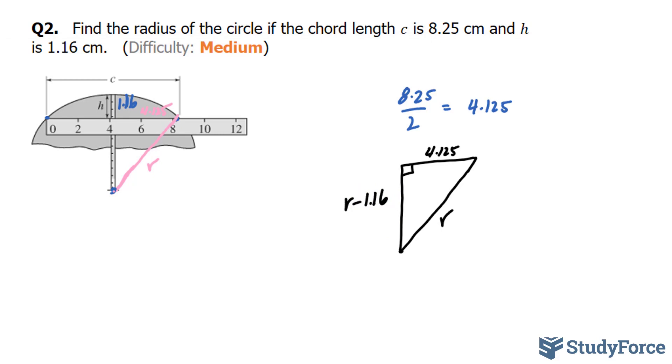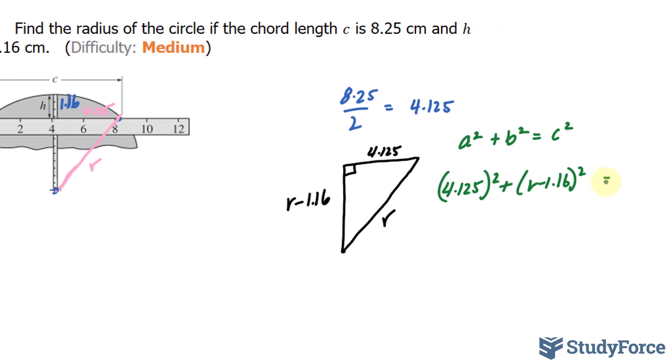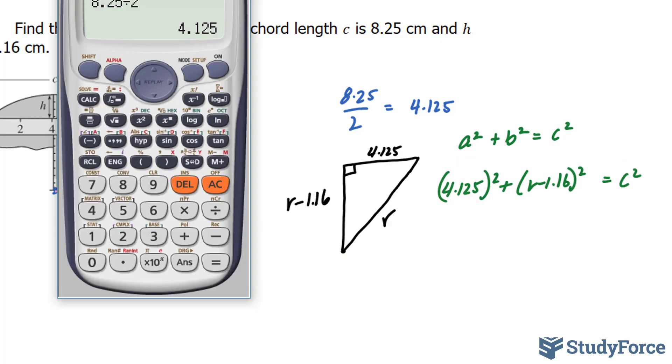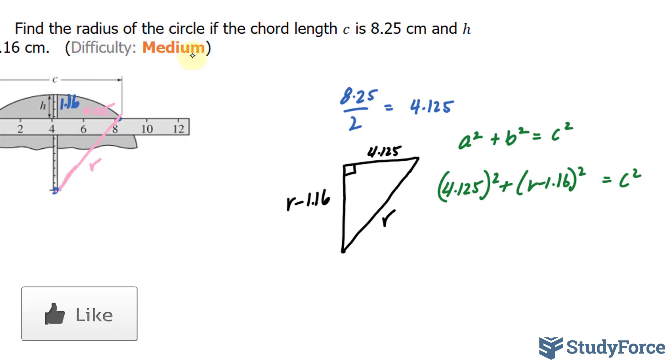Now let's plug this into the Pythagorean theorem, which was a squared plus b squared is equal to c squared, and let's try to solve for r. This leg and this leg are given as our a and our b is equal to c squared. This will be replaced with r shortly. This part is easy. You square the number and you get 17.015.